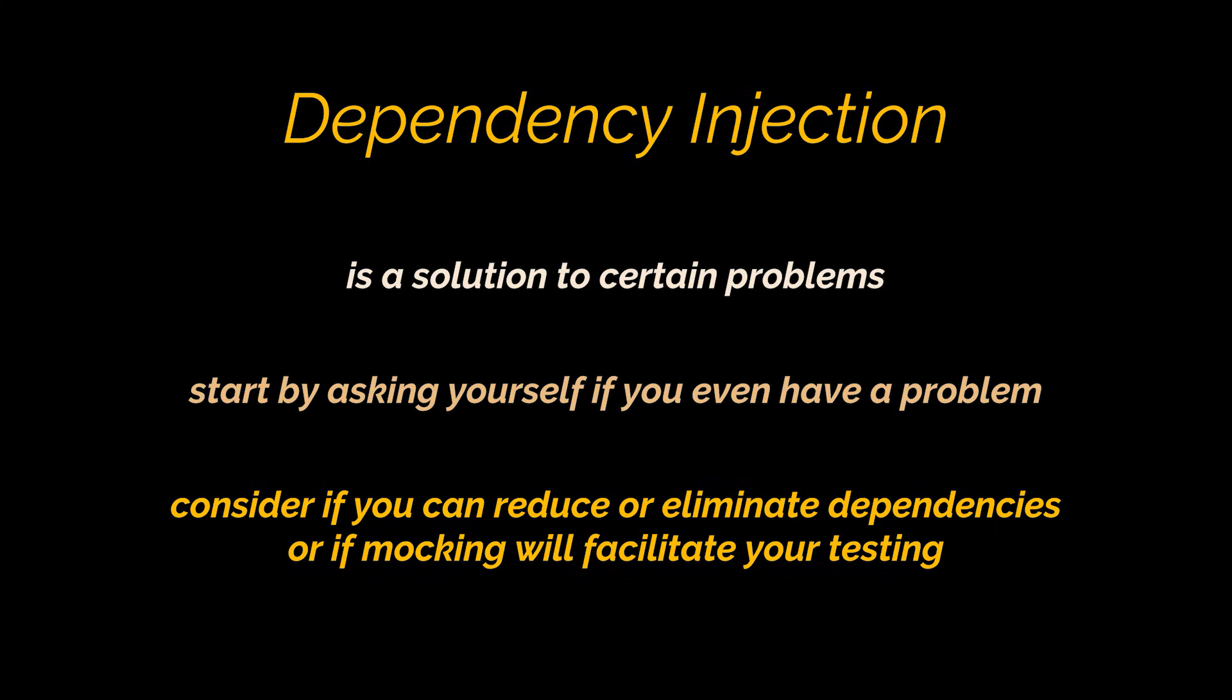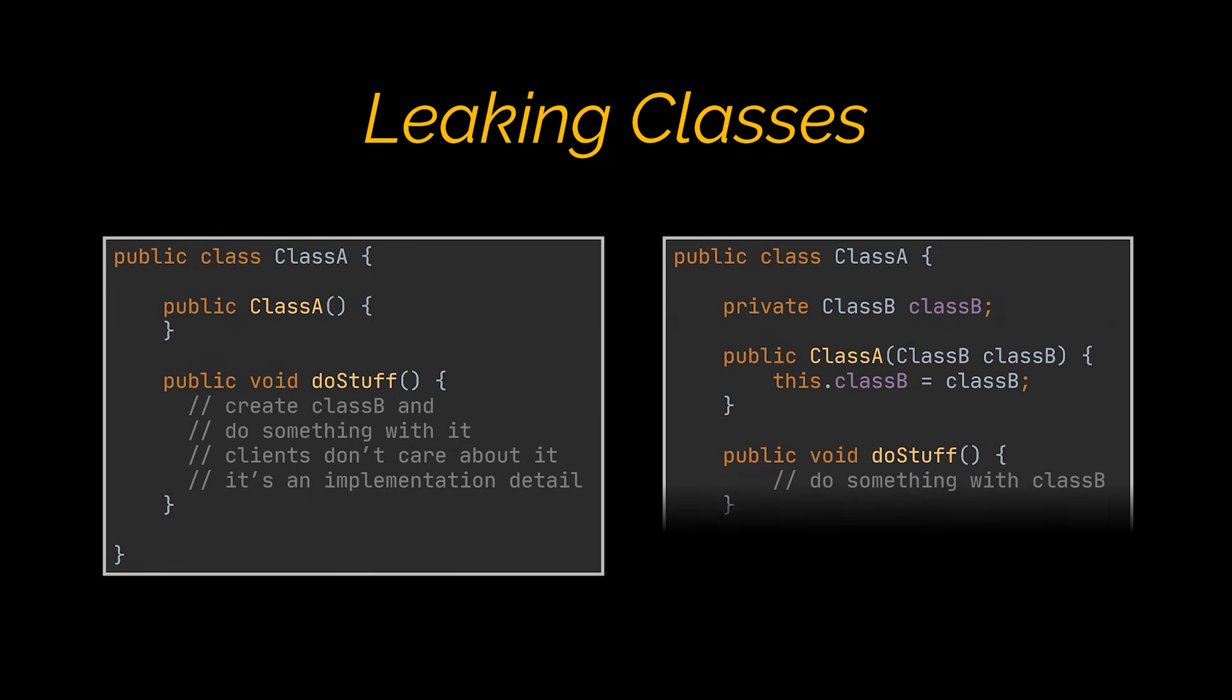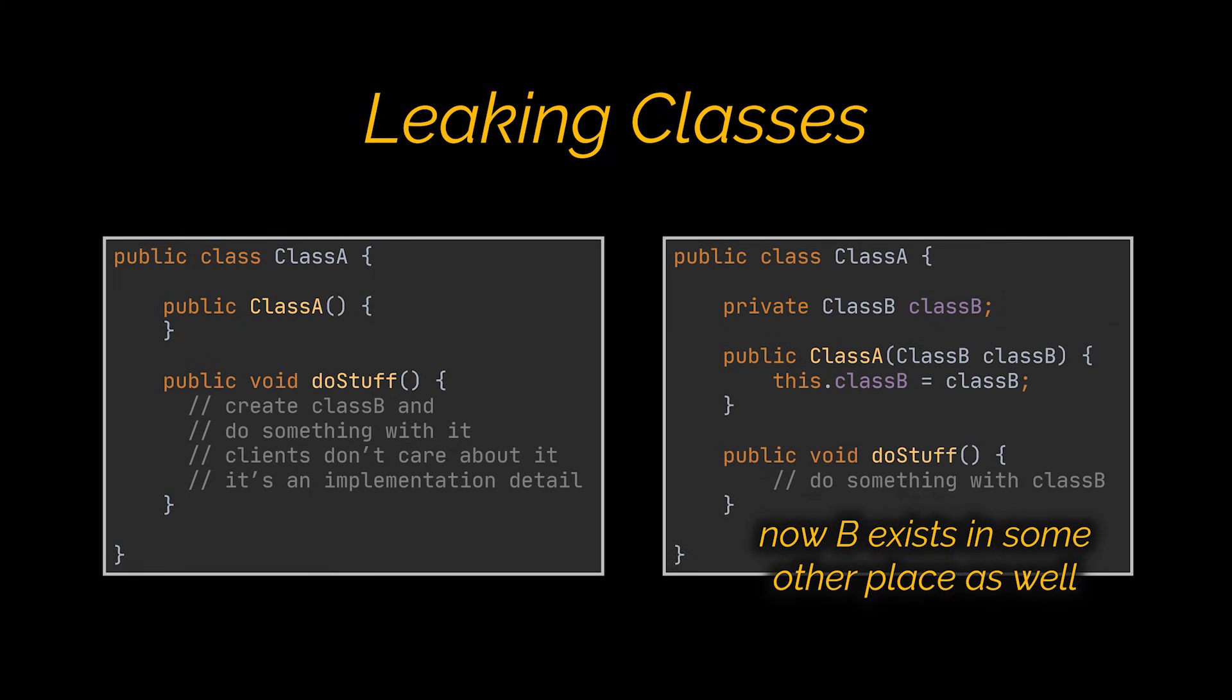As an example, suppose you have a class A which uses another class B internally. B is only used by A and therefore fully encapsulated and can be considered an implementation detail. If you change this to inject B into the constructor of A, then you have exposed this implementation detail and B has to exist in some other place in the system separately from A, leading to an overall worse architecture with leaking concerns.